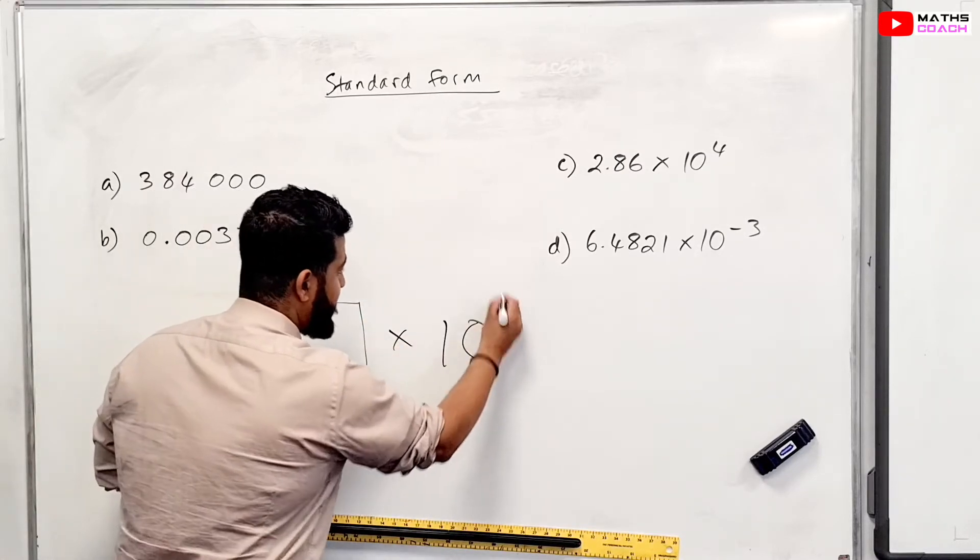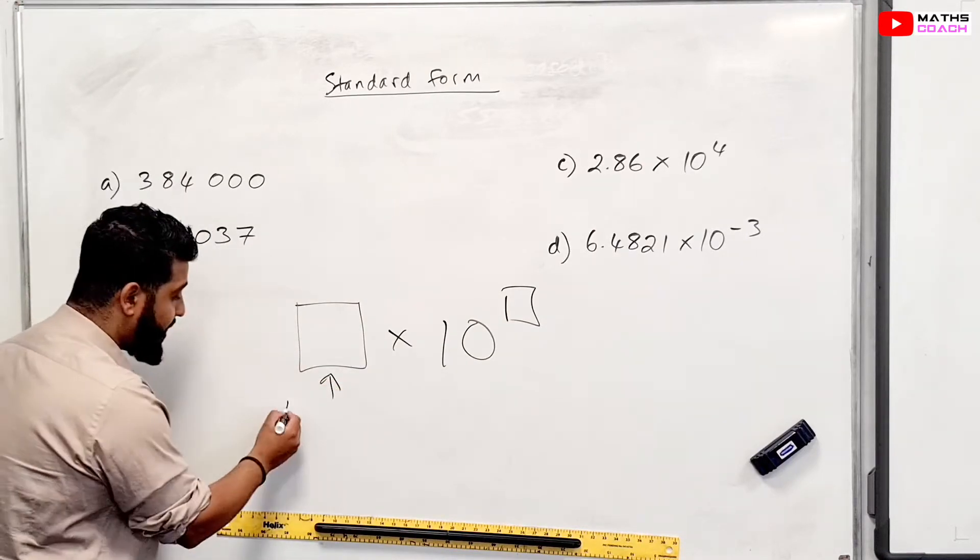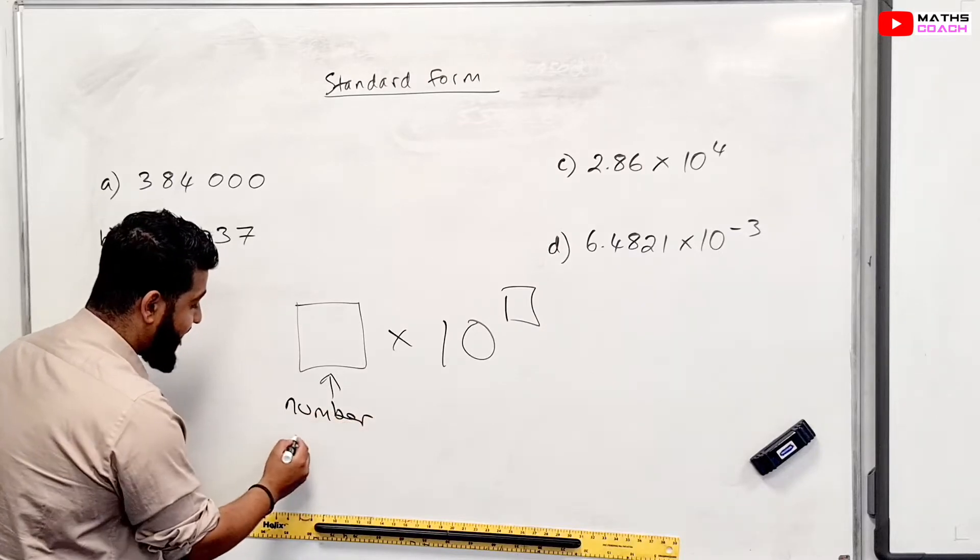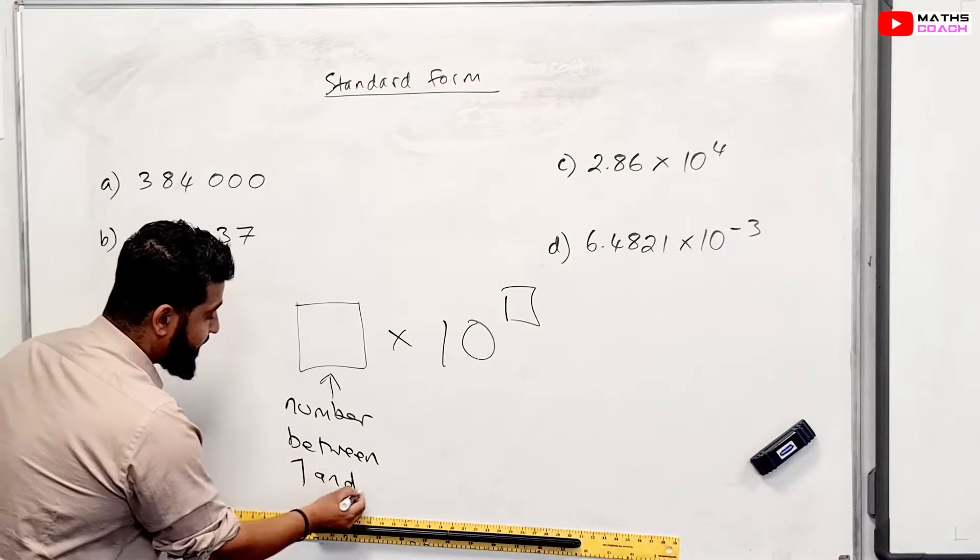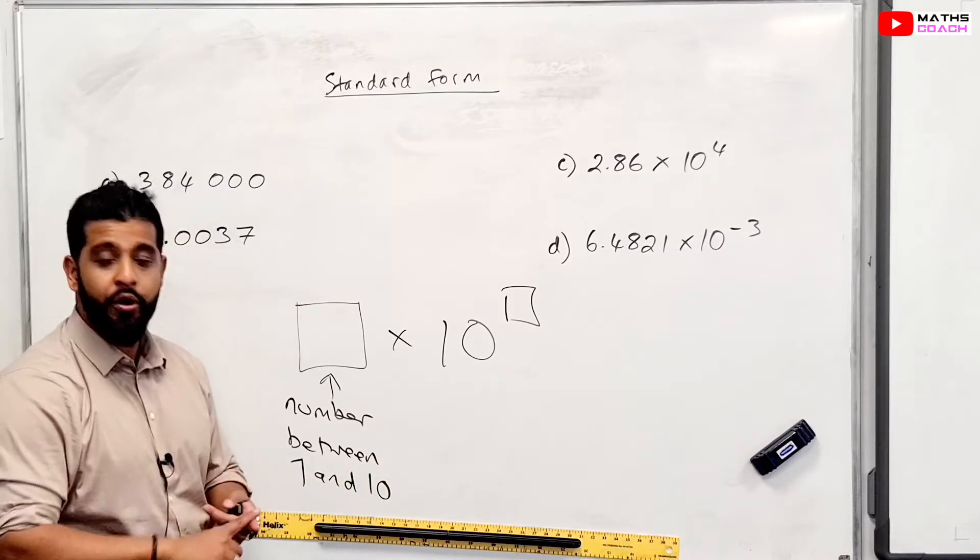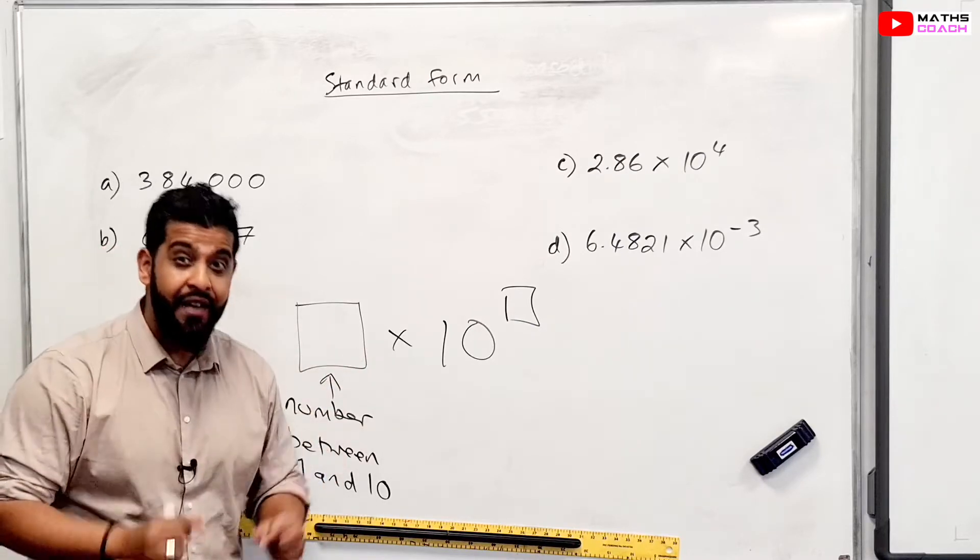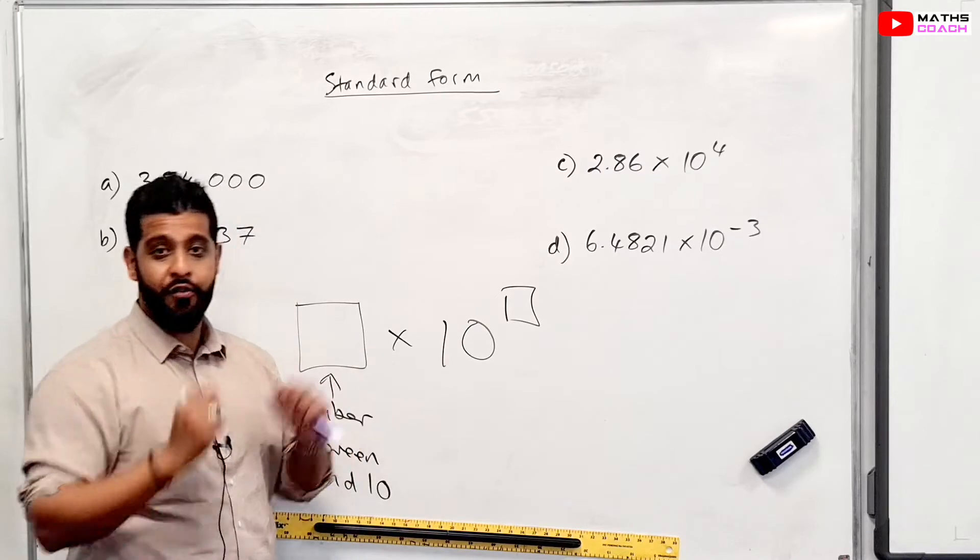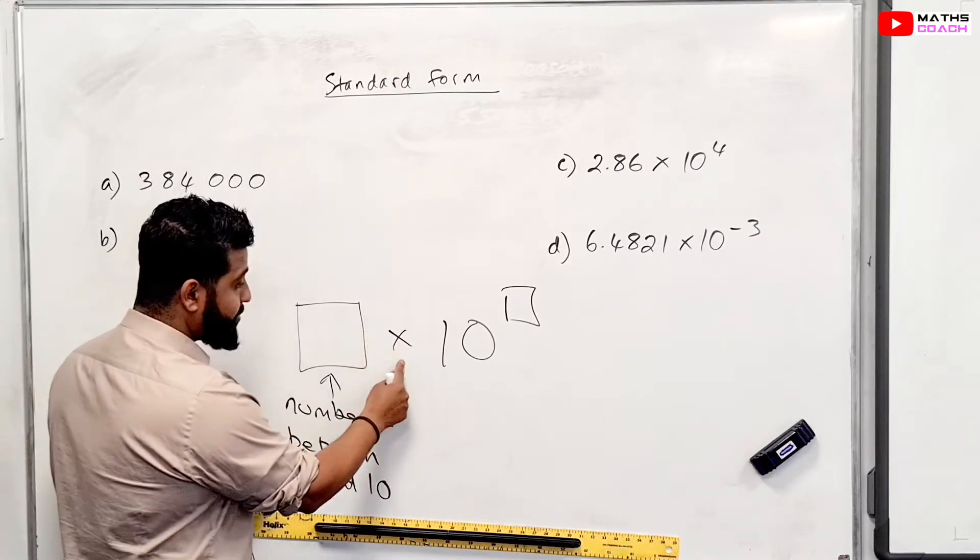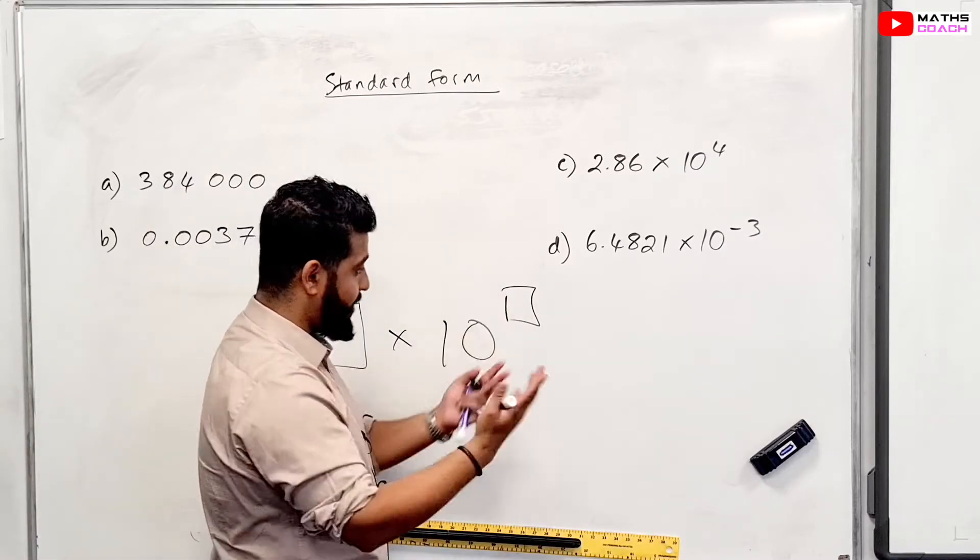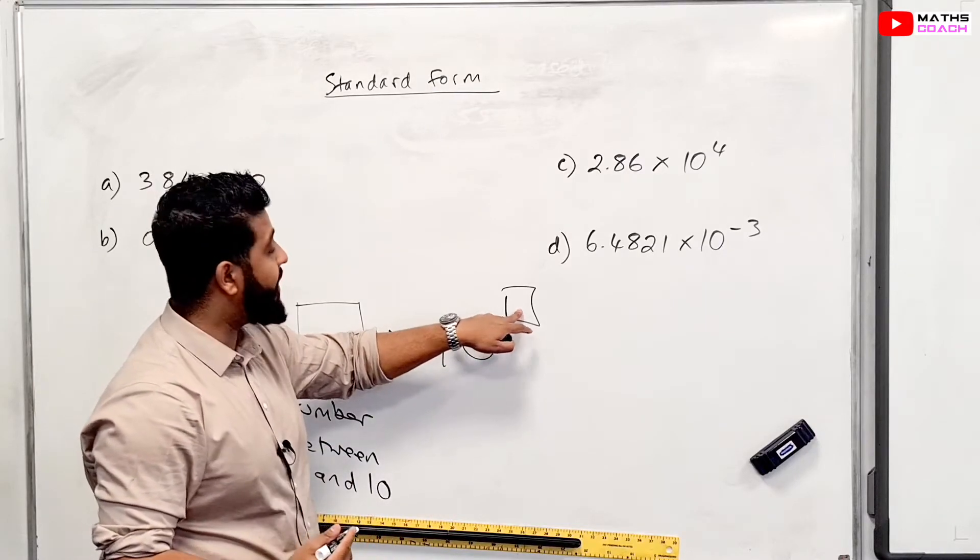Now, the important thing is standard form has this format, where you have this right there. Now, this number here, what goes in here has to be a number between 1 and 10. So a number between 1 and 10. So you can have 1.1, 3.1, and 9.8 or something like that. You can't have 0.3, for example, because that's not more than 1. And then you have this times by 10 to the power of a value, whatever the index number is, which you'll have.